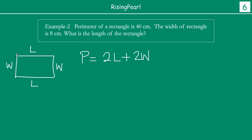Perimeter means total length, the total boundary — L plus W plus L plus W. That is what we call perimeter. Now perimeter is given as 40, and we already know the width of the rectangle is 8. Find the length of the rectangle.